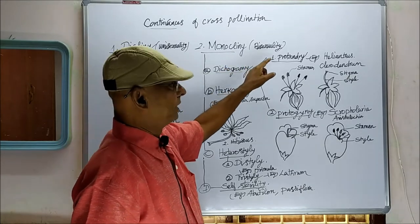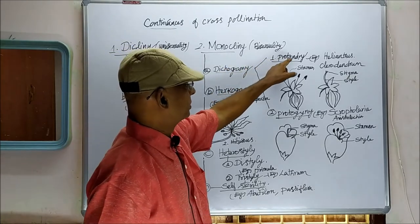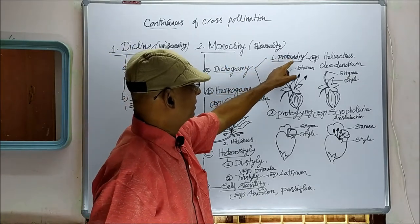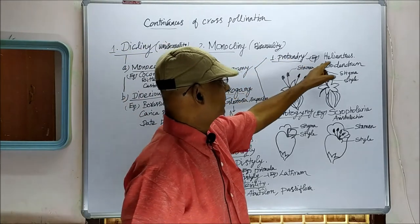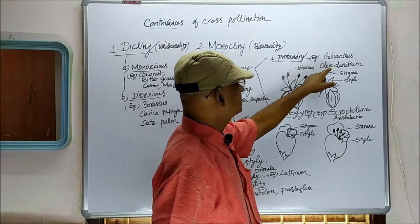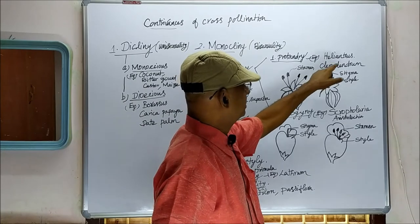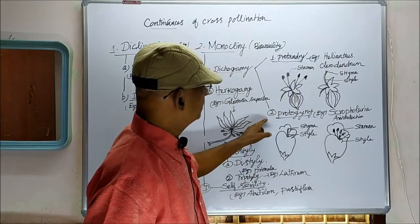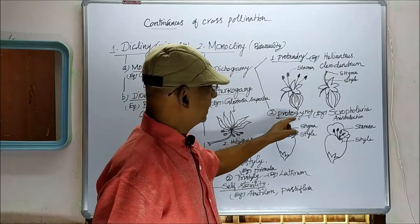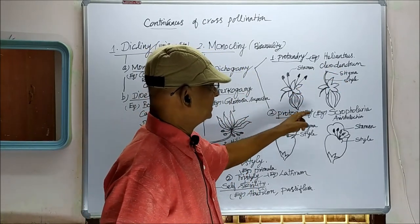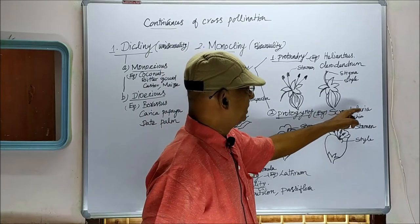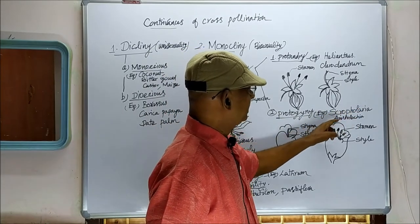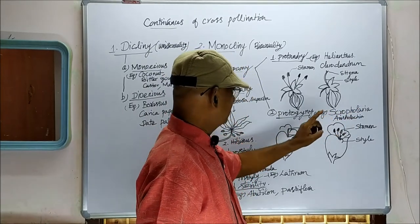Dicogamy is further subdivided into protandry — example, Helianthus and Clerodendron — and second, protogyny — example, Scrophularia and Aristolochia.